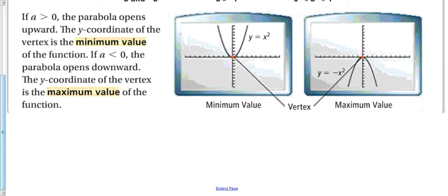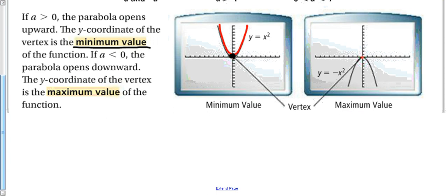If a > 0, the parabola opens upward and the y-coordinate of the vertex is a minimum value of the function — the function cannot get any lower than that point. If a < 0, the parabola opens downward and the y-coordinate of the vertex is the maximum value — that's the highest the function can ever go.